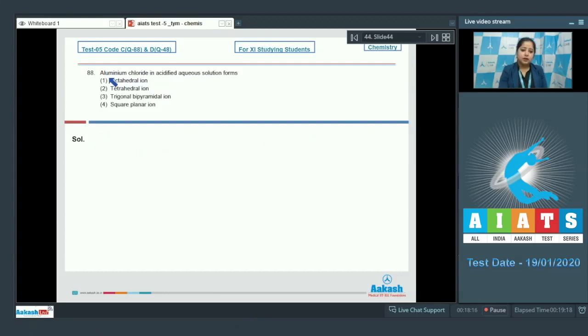Moving to the next question, aluminum chloride in acidified aqueous solution forms... I am writing the reaction of aluminum chloride, AlCl3, with water. It forms a complex Al(H2O)6 3+ with 3 Cl-.